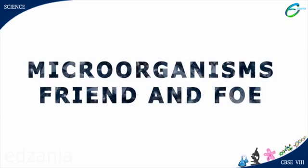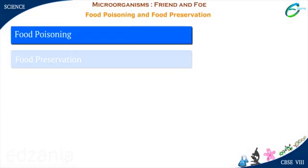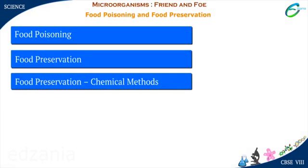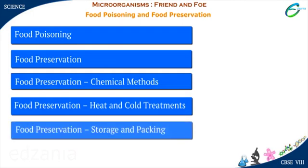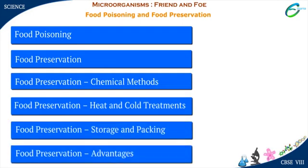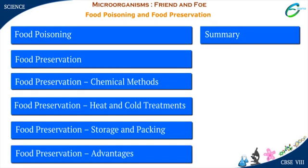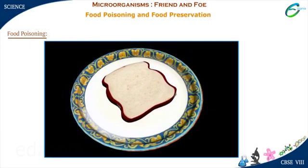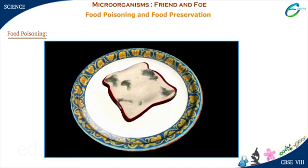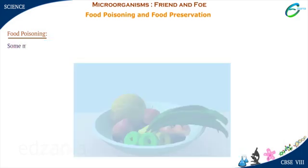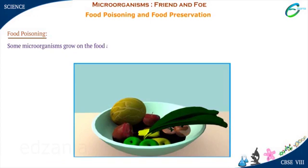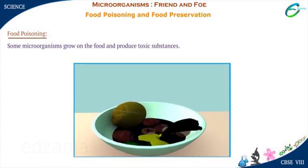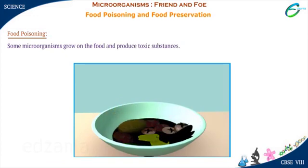Microorganisms, friend and foe. Food Poisoning: Have you seen the bread left for 2-3 days gets spoilt? Some microorganisms grow on the food and produce toxic substances. These toxic substances make the food poisonous.